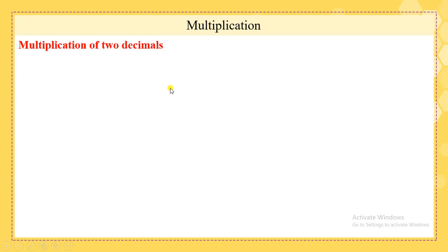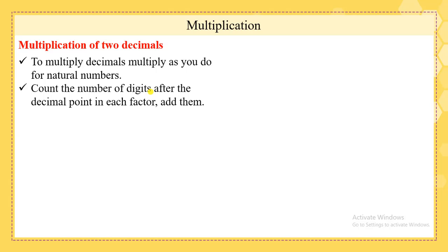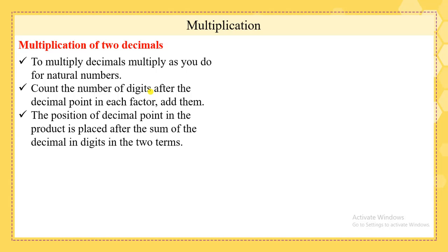Multiplication of two decimals. To multiply decimals, multiply as you do for natural numbers. Count the number of digits after the decimal point in each factor and add them. The position of the decimal point in the product is placed after the sum of the decimal digits in the two terms.